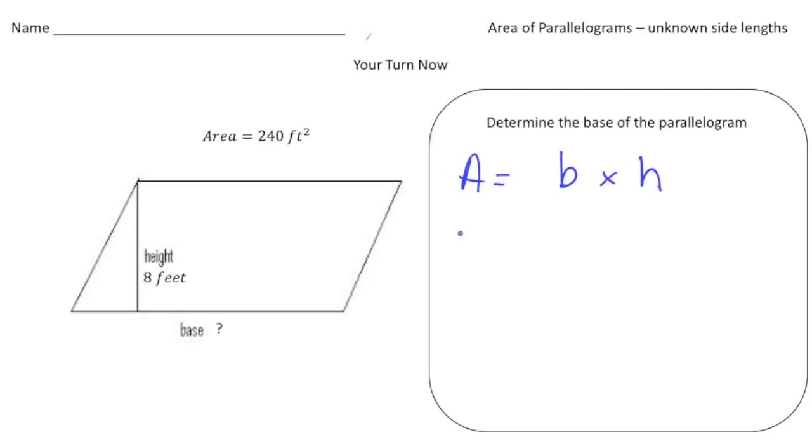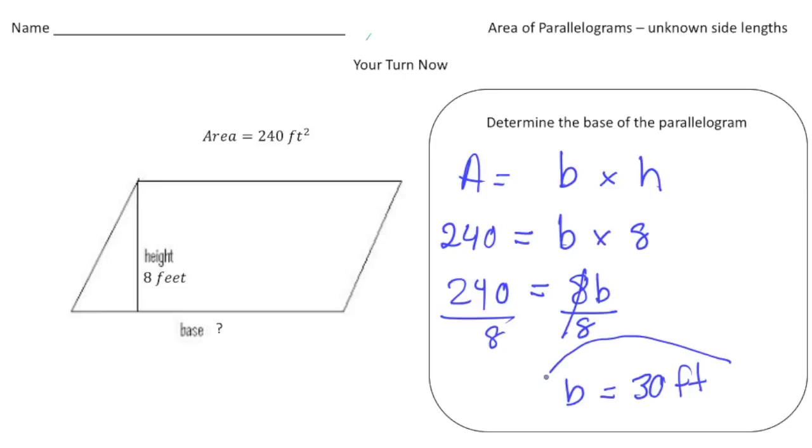Now we plug in what we know. We know the area is 240, so 240 is going to equal, well the base is the unknown, so it's going to be b times the height, which is 8. So 240 is going to equal 8b. Now I'm going to divide both sides by 8, and b is going to be 30 feet. There's your answer. How'd you do?